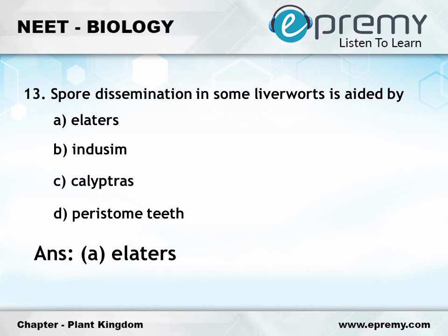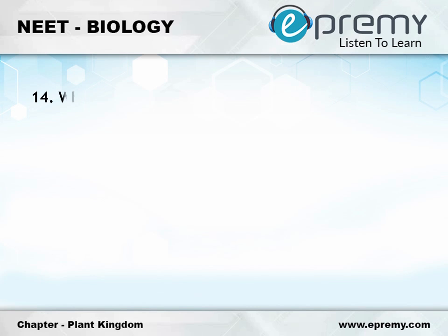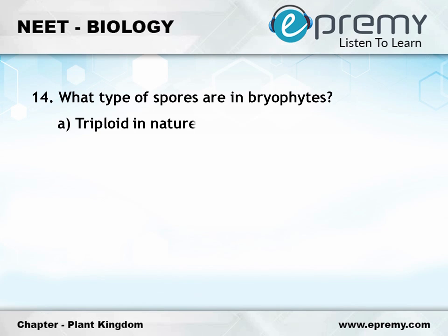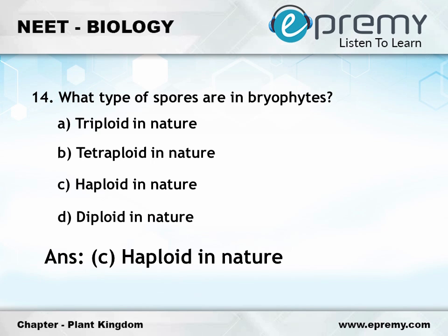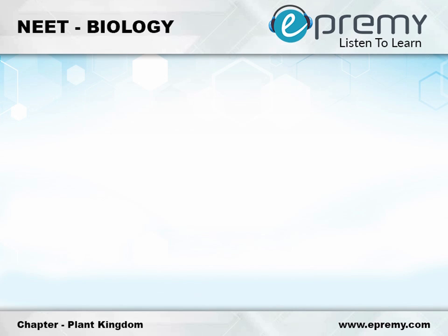Question number fourteen: what type of spores are in bryophytes? Option A triploid in nature, option B tetraploid in nature, option C haploid in nature, option D diploid in nature. The answer is option C haploid in nature.